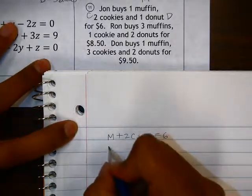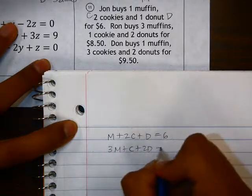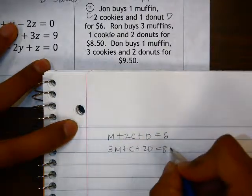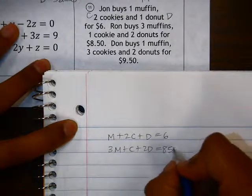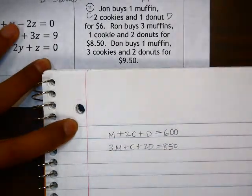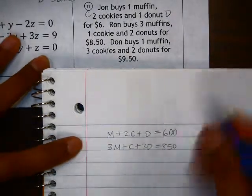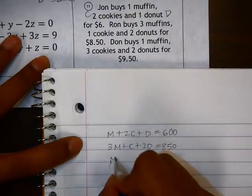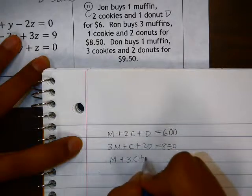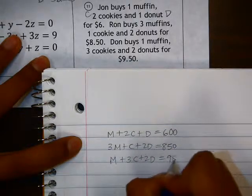He buys three muffins, one cookie, and two donuts for $8.50. And I'm going to go ahead and just change everything to cents, so I don't have to deal with any decimals, and then we'll go back at the end and change it back to dollars and cents. The last statement is that he buys one muffin, three cookies, and two donuts, and pays $9.50.